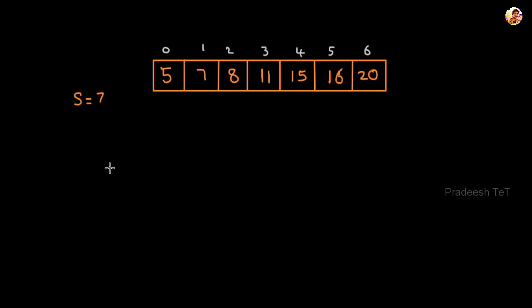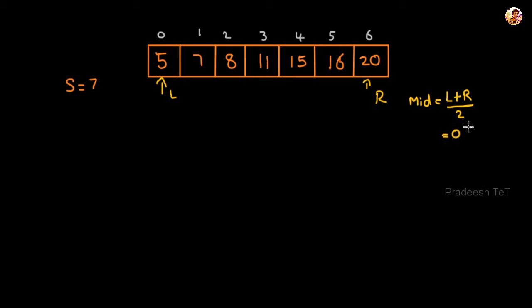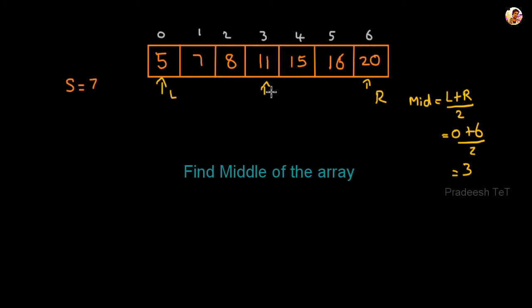We will mark L as the leftmost of the array and R as the rightmost — that is the start and end of the array. The middle index M is calculated as L plus R divided by 2. So if L is index 0 and R is index 6, then M equals 0 plus 6 divided by 2, which is 3. So index 3, which holds the element 11, is the mid of the array.